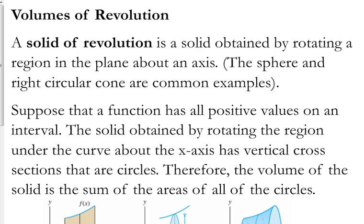Spheres and the right circular cone are examples of a solid of revolution. If you take a circle that's centered on the origin and you rotate it about either the x or y axis, you're going to end up with a sphere.